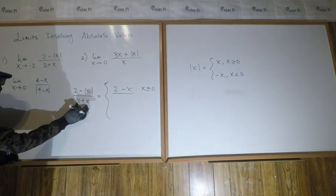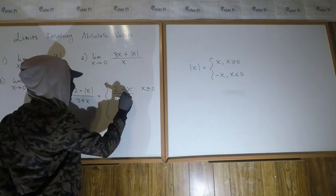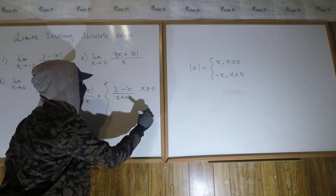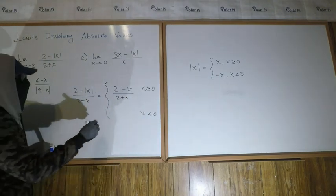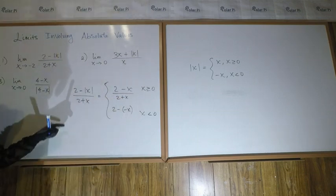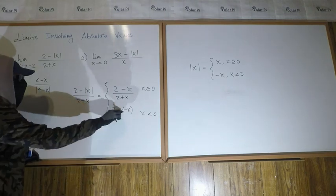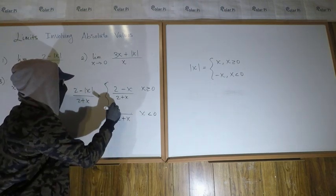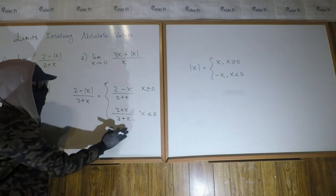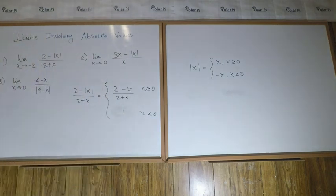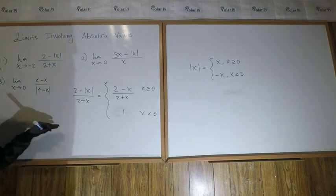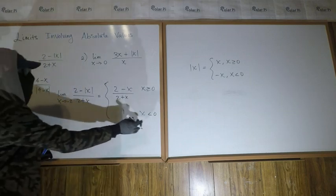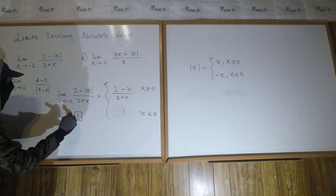So we get (2 minus x) over (2 plus x) when x is greater than or equal to zero. When x is less than zero, the absolute value of x is negative x, so the numerator becomes 2 minus (negative x), which is 2 plus x, over 2 plus x — that simplifies to 1. Since negative 2 belongs in the piece where x is less than zero, the limit as x goes to negative 2 equals 1.